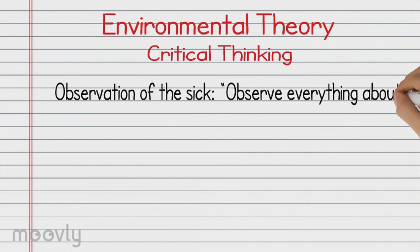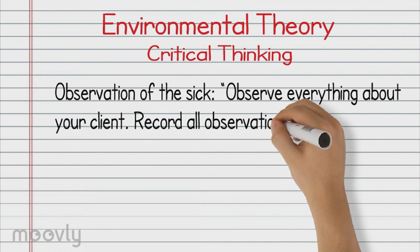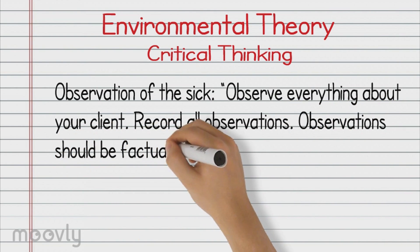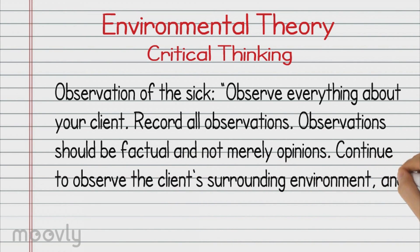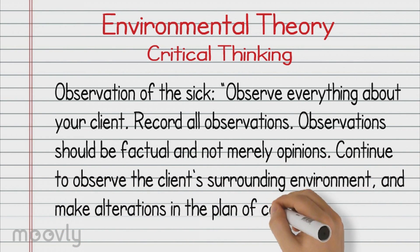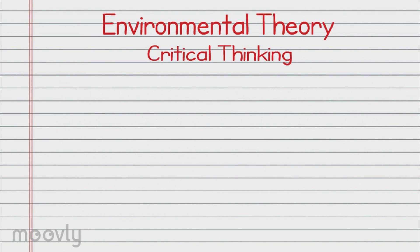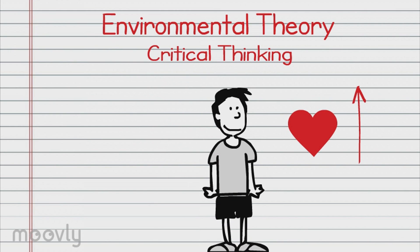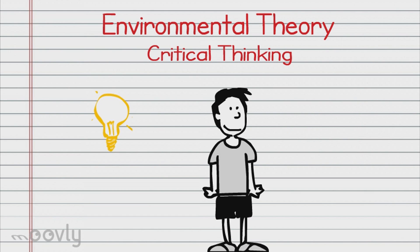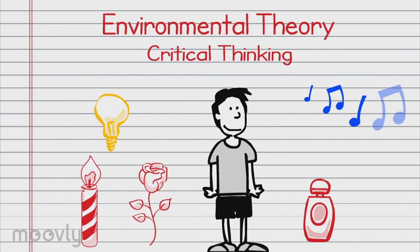Observation of the sick. Observe everything about your client. Record all observations. Observations should be factual and not merely opinions. Continue to observe the client's surrounding environment and make alterations in the plan of care when needed. Johnny stated earlier that his pain level was a 7 out of 10, and his blood pressure and pulse were higher than normal. So using the environmental theory to alleviate Johnny's pain, we can create a soothing environment by dimming the lights and playing calm music in the background, as well as introduce aromatherapy such as oils and natural fragrances.